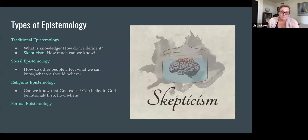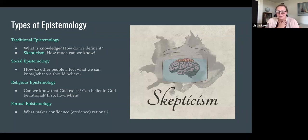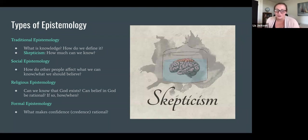The final category is what's known as formal epistemology. Formal epistemology treats beliefs kind of like probabilities and asks questions about what makes having a certain level of confidence — what an epistemologist might call a credence — rational. For example, if you have a 0.9 confidence that it will rain tomorrow, a 90% chance of rain, what would make that rational? So those are the different subfields within epistemology.